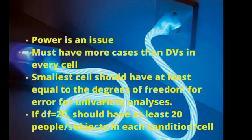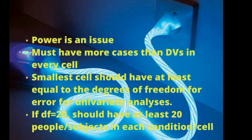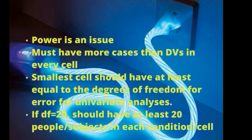Before we go further, remember that power is a real issue with MANOVA because it is so complex — it's running a lot of ANOVAs and post-hoc or follow-up analyses of some sort. You're going to need a lot of people in your study. You need more cases than dependent variables in every cell — every little group of participants you're comparing. The smallest cell should have at least as many participants as the degrees of freedom for error for the univariate analyses. My suggestion is to run a power analysis using something like G-Power, particularly if you're doing a real study with a community sample, so you have faith that the results are not spurious.